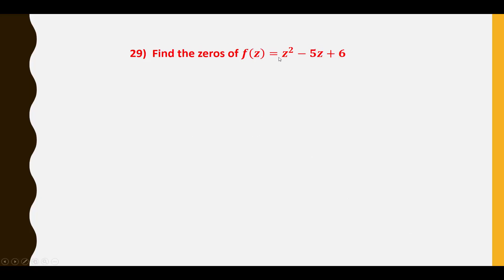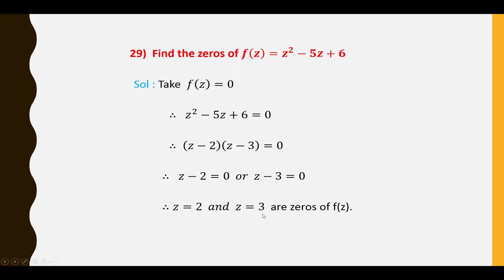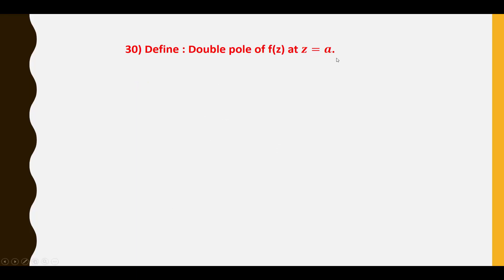Twenty-ninth question: Find the zeros of F(Z) = Z² − 5Z + 6. Setting F(Z) = 0: Z² − 5Z + 6 = 0, factoring gives (Z − 2)(Z − 3) = 0. So Z = 2 and Z = 3 are zeros of F(Z).